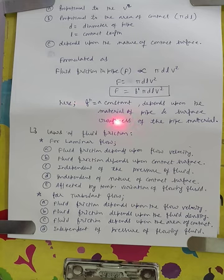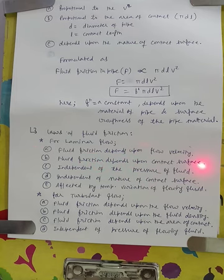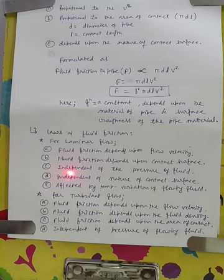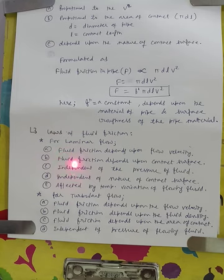Now let us see the laws of fluid friction. First, for laminar flow: (1) fluid friction depends upon the flow velocity; (2) fluid friction depends upon the contact surface area; (3) fluid friction is independent of the pressure of the fluid; (4) fluid friction is independent of the nature of the contact surface; (5) fluid friction is affected by temperature variation in the flowing fluid. These are the five laws of fluid friction for laminar flow.